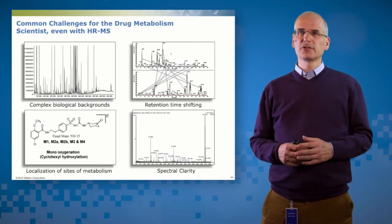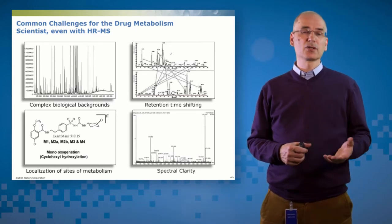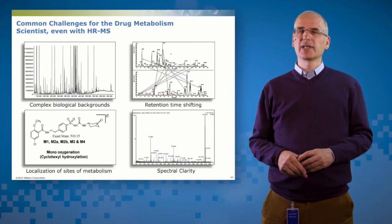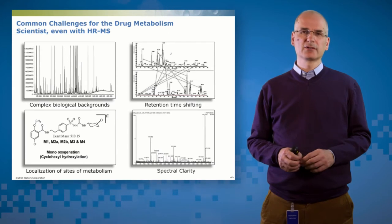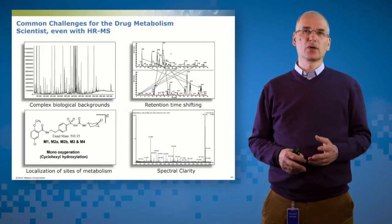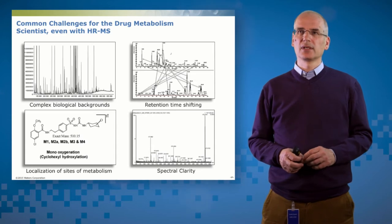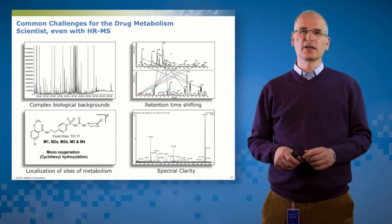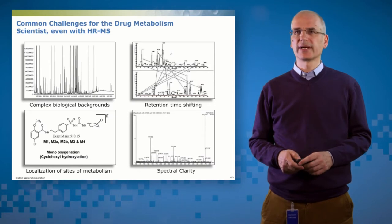Second challenge that we might face is retention time shifting. So we might start off with one simple method, a ballistic gradient, but over time that method evolves and the analytes of interest that we're looking at move around in the chromatogram depending on what gradient we use, what column we use, what excipients we have in there. And we want to track the analytes of interest across those different chromatograms.